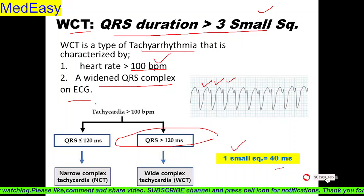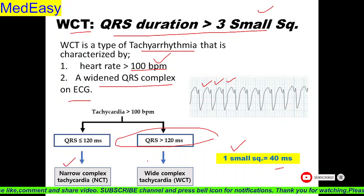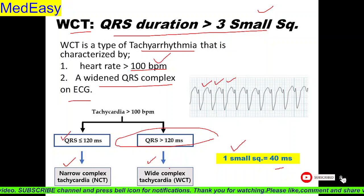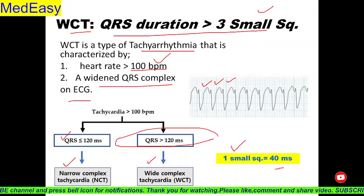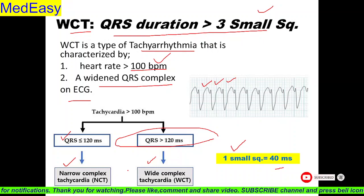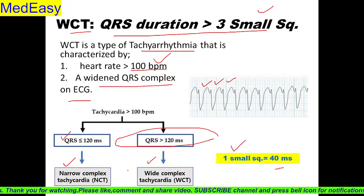Tachycardia ko jab hum manage karte hain, toh hum usko divide karte hain based on QRS duration — one is narrow complex tachycardia and another is wide complex tachycardia. Narrow complex tachycardia mein QRS duration is less than 120 milliseconds and in wide complex tachycardia duration is more than 120 milliseconds. Narrow complex tachycardia hum ne sab discuss kiya hua hain, aapko link uske videos ke description box mein mil jaega. Isme hum discuss karenge all about wide complex tachycardias.